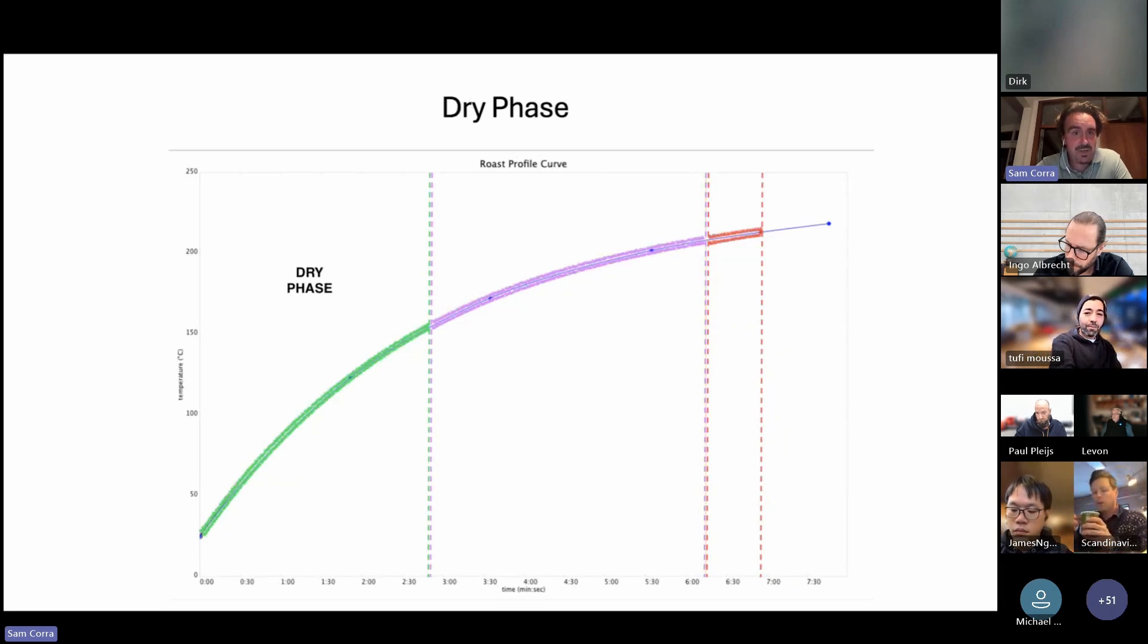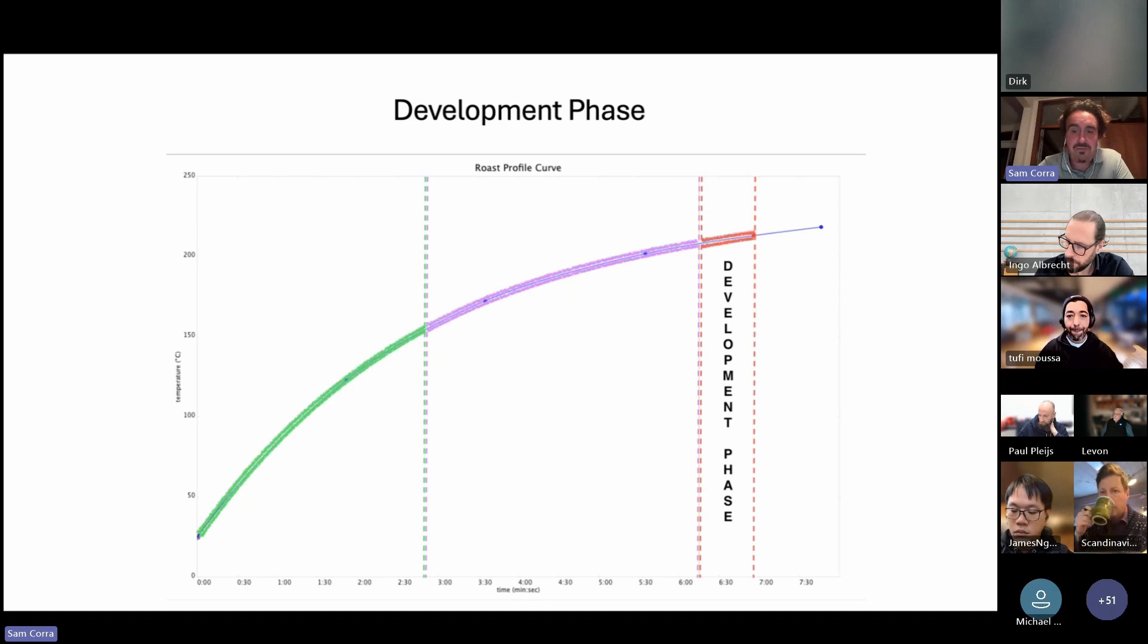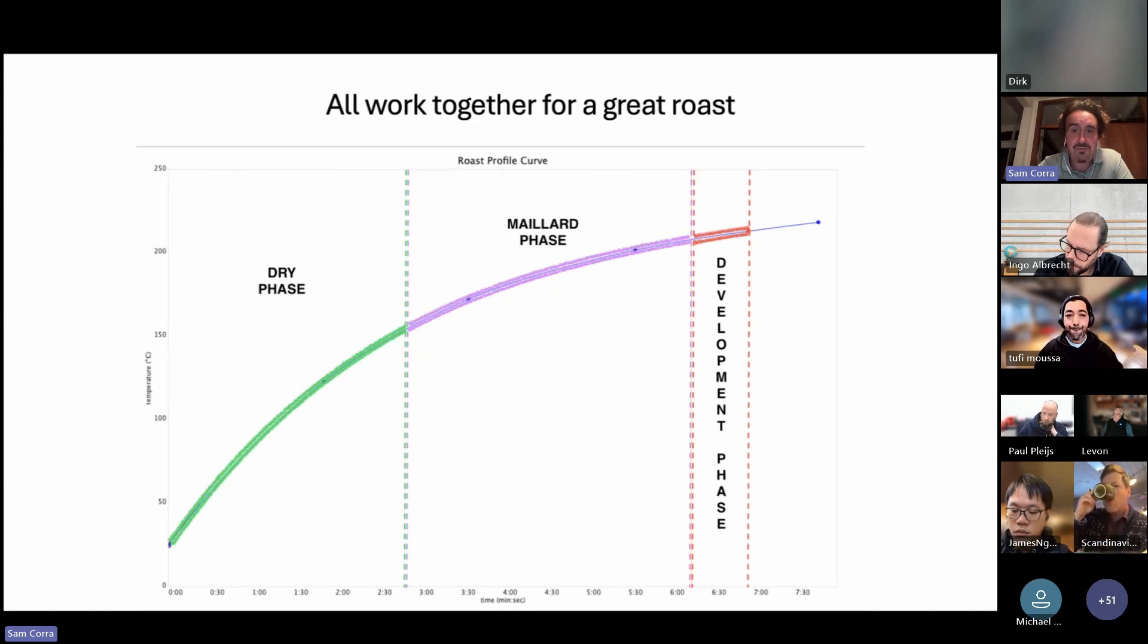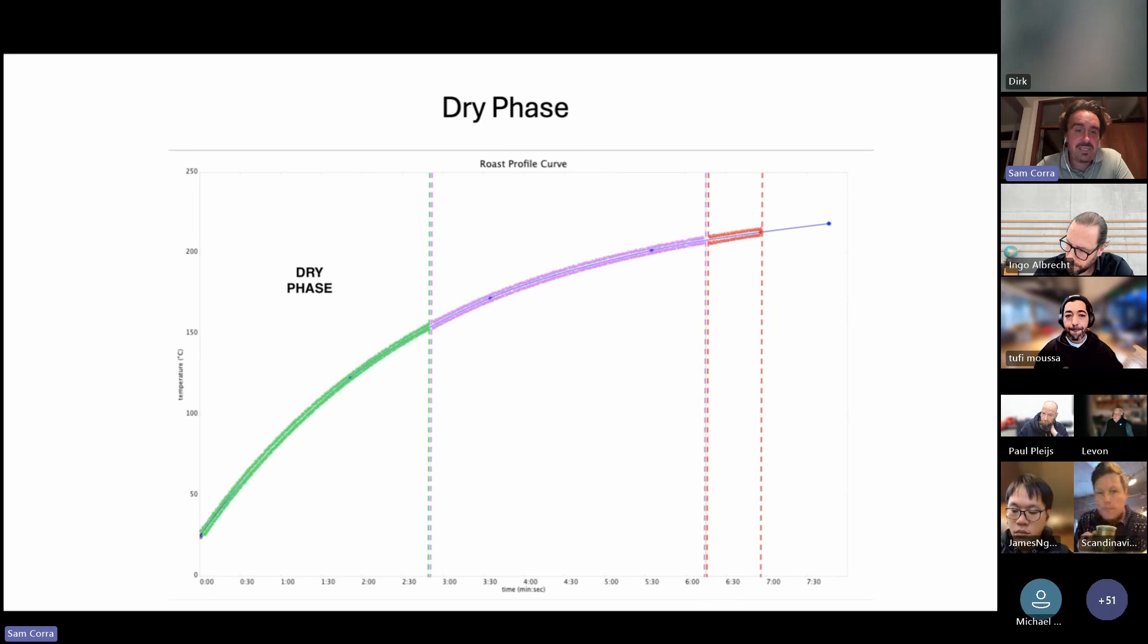Last thing before we jump into questions is talking through the different stages and how you can see through the Link system we're managing what these are. The start of the roast, that preheat phase in the Link system, is that dry phase. A nice thing you can do is if you're managing your roast and trying to mimic particular stylings or timings of the Link on a production roast, you can start to have a look at the different phases and when they've occurred and potentially try and link them up as well from a time bracket, not so much a temperature bracket.